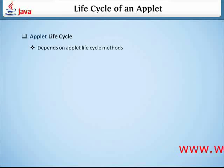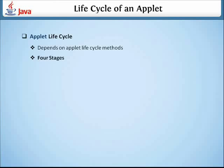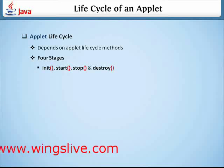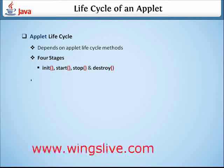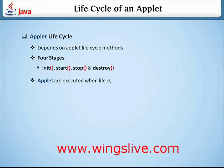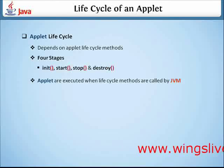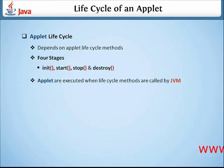Applet life cycle methods are separated into four stages, namely init, start, stop, and destroy. Applets are executed when its life cycle methods are called by JVM.